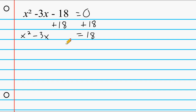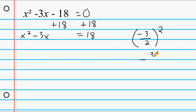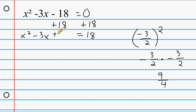Now take the b value. Notice there is a minus in front, so we treat this as −3. We divide it by 2 and then square it. So we have (−3/2) × (−3/2). A negative times a negative gives a positive, so we end up with positive 9/4. We write +9/4 in the blank space on the left, and what we write on the left we also write on the right-hand side.